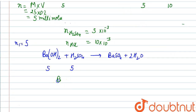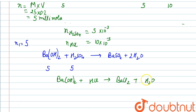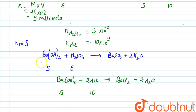For the second neutralization: Ba(OH)₂ + 2HCl → BaCl₂ + 2H₂O. This is the balanced equation. We have 10 millimoles of HCl. Since 2 moles of HCl require 1 mole of Ba(OH)₂, 10 millimoles of HCl will require 5 millimoles of Ba(OH)₂.